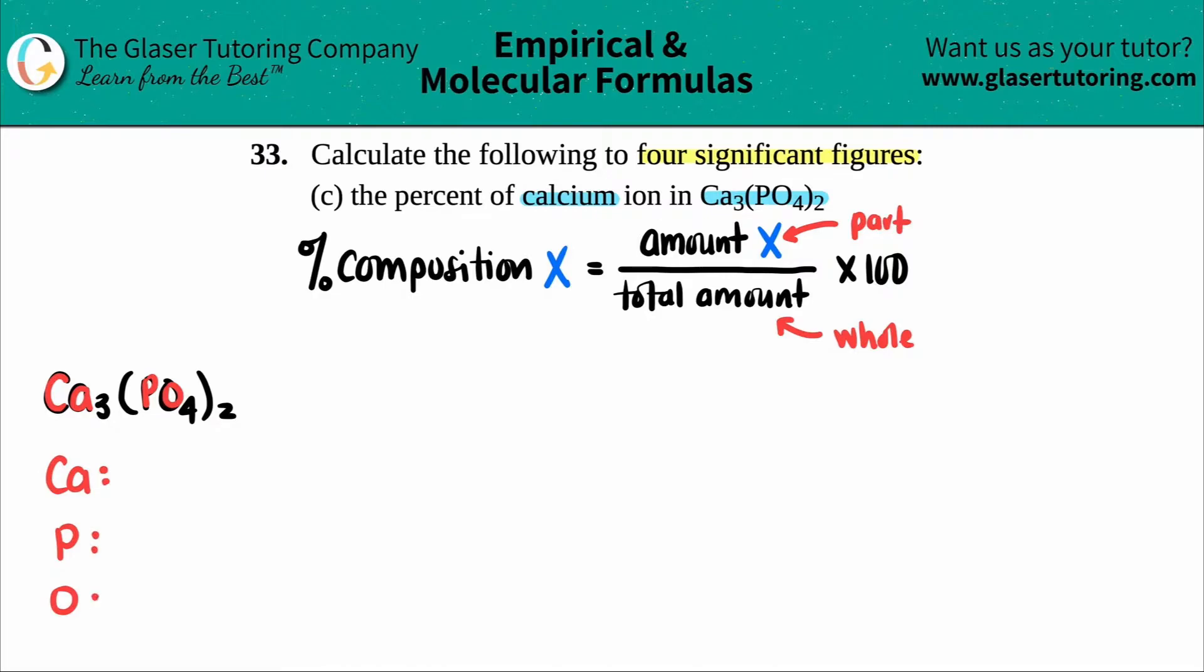Now, the next thing you're going to do is you're just going to say how many you have of the calcium, phosphorus, and oxygen by looking at the subscripts. Now there's a three here, which tells me that I have three calciums. There's a secret one right next to the phosphorus, right?